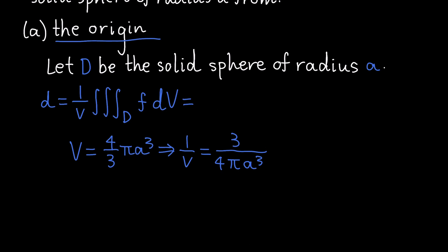Well, we can substitute that in, giving us 3 over 4 pi a cubed times the triple integral over D, which is our solid sphere. And F is rho, which is just the distance from the origin to any point, dV. But now we can do a bit of simplifying, right? What's dV?